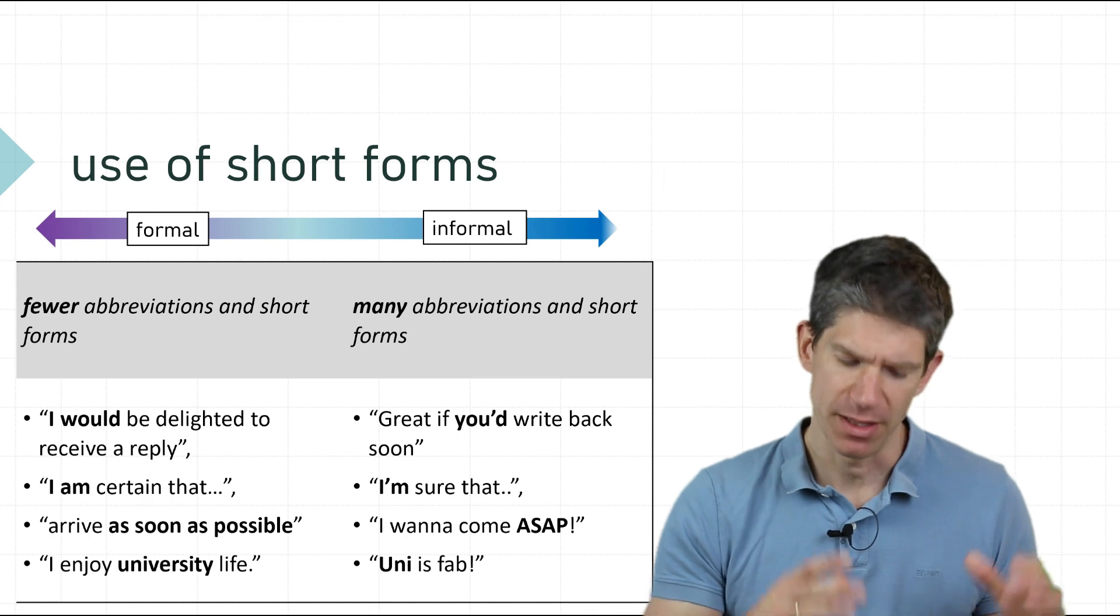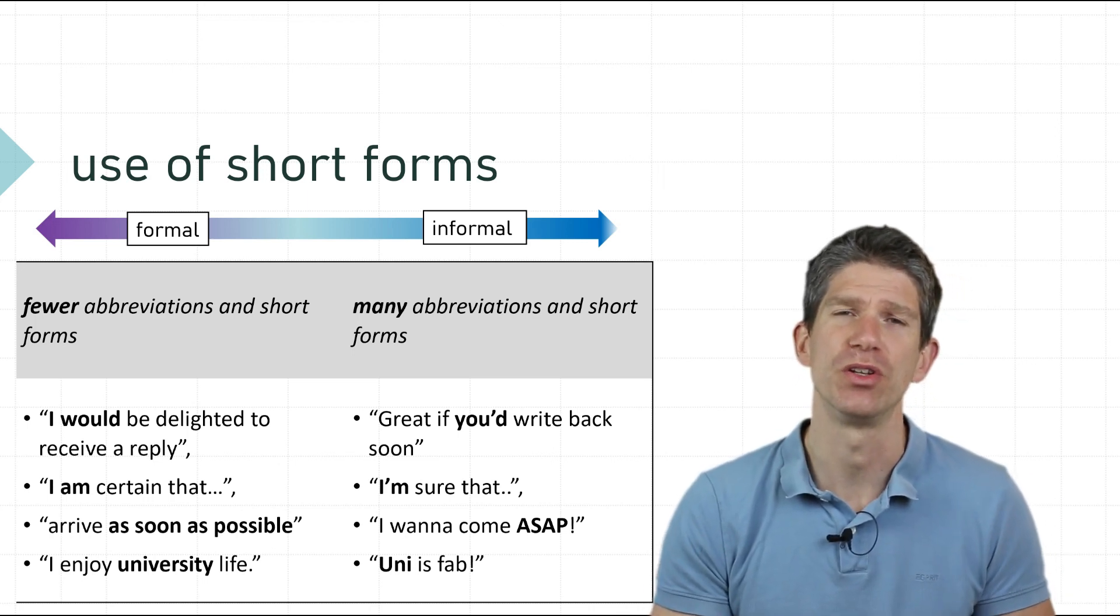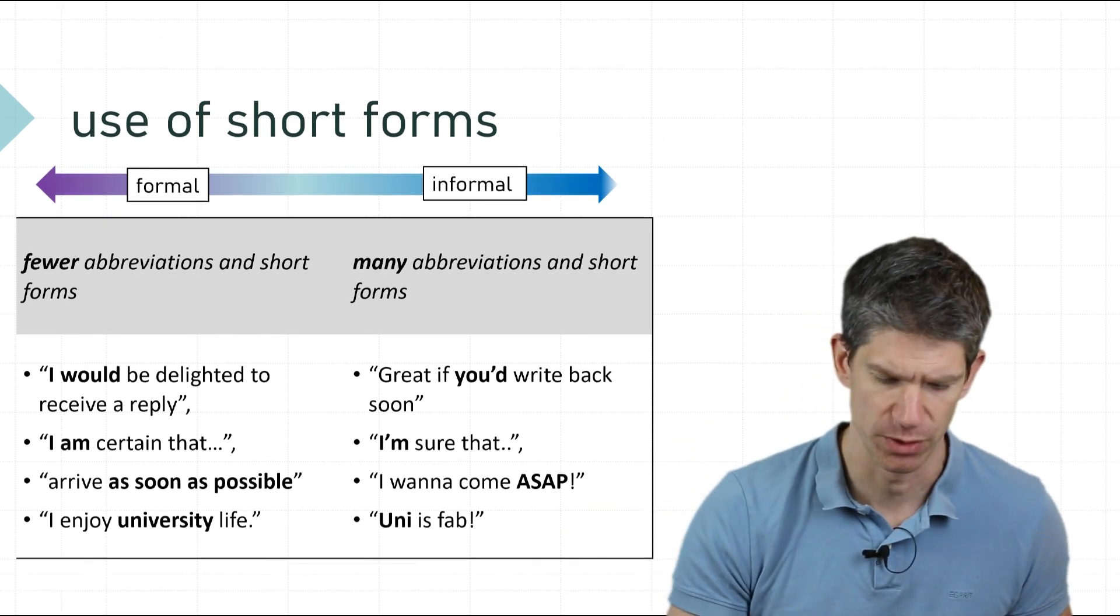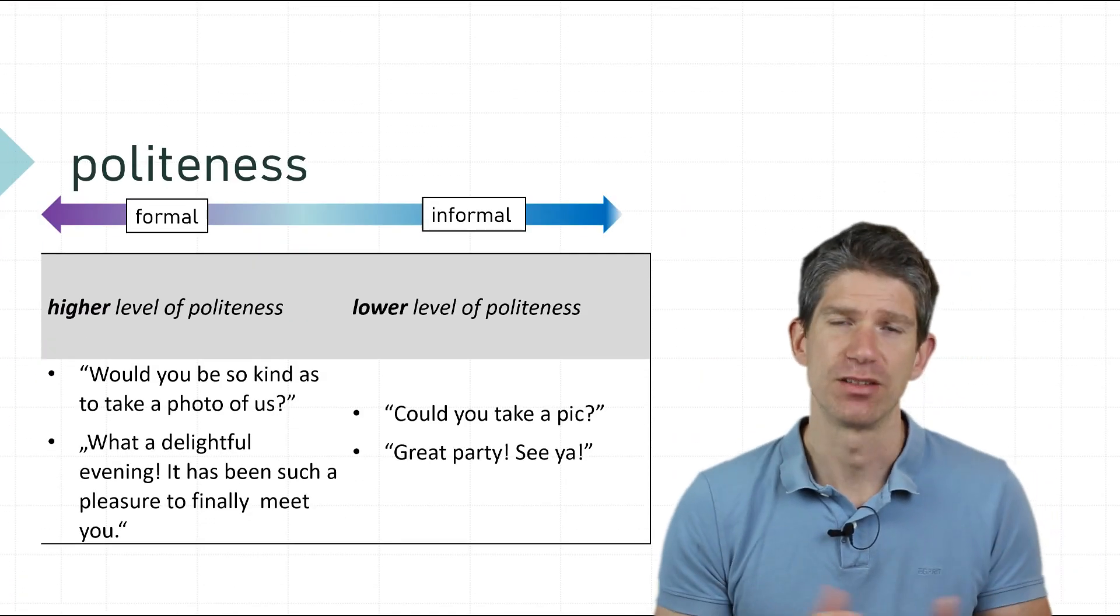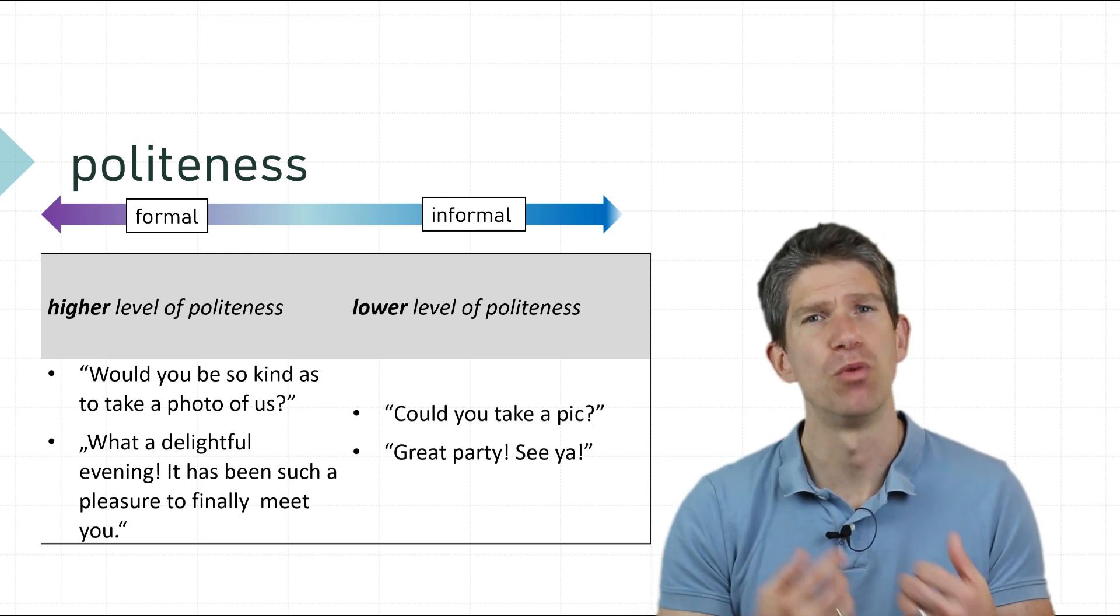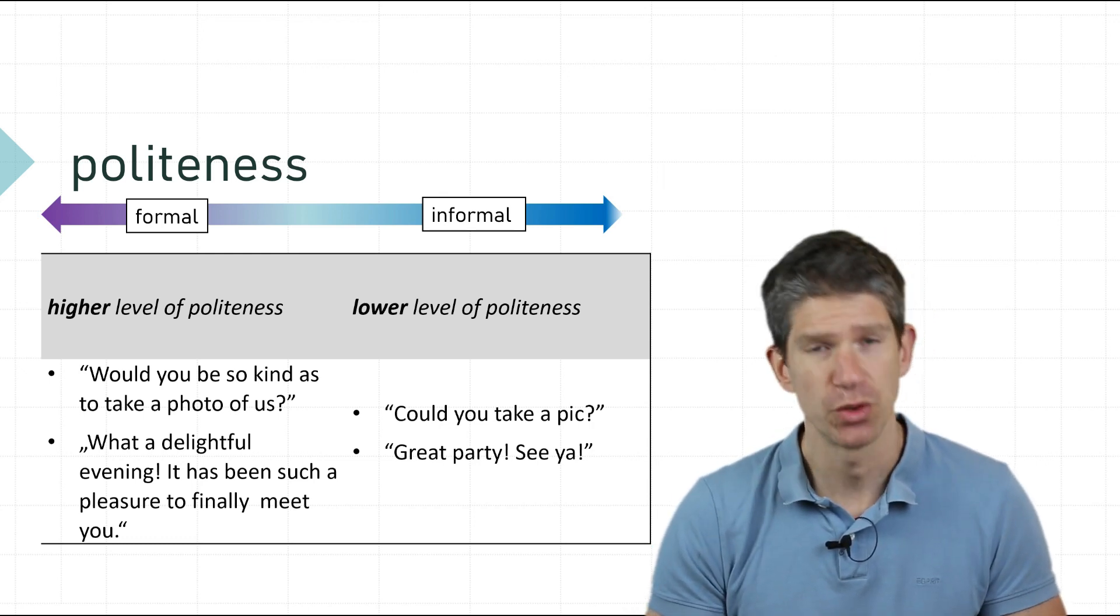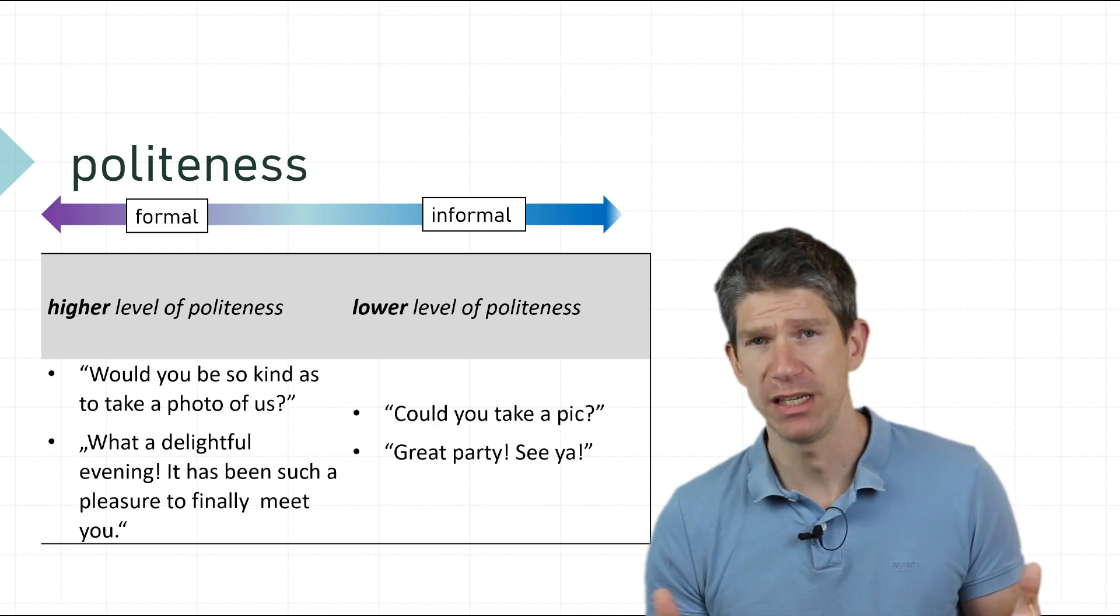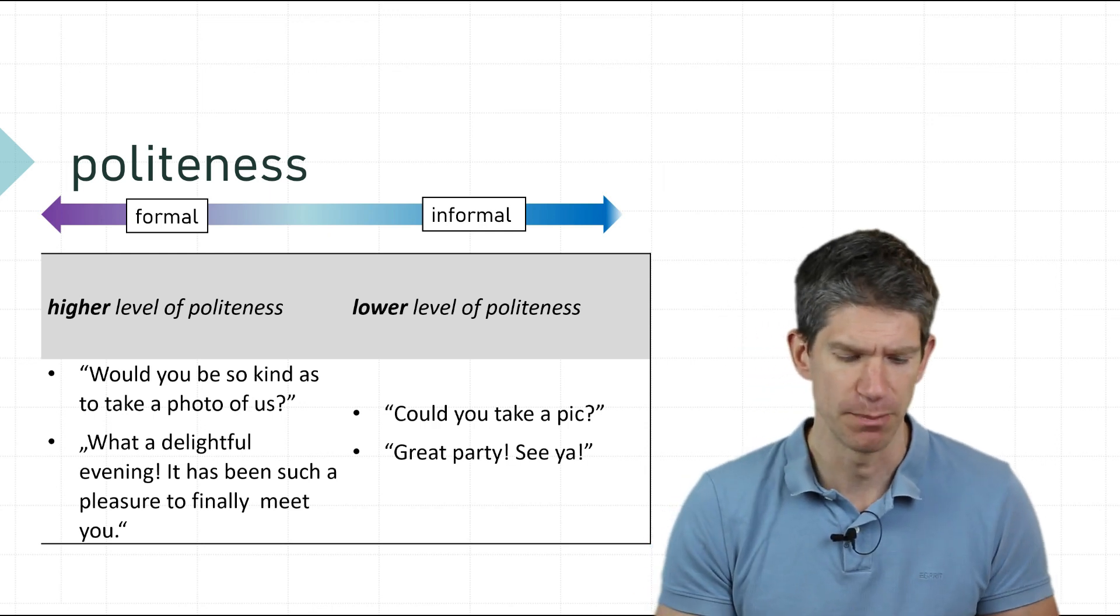Politeness: obviously you want to be more polite in a more formal situation. When it's your friend you could just walk over to them and say 'Could you take a pic?' and they wouldn't be offended. But if it's a stranger, a person you don't know well, you might want to ask 'Would you be so kind as to take a photo of us?'